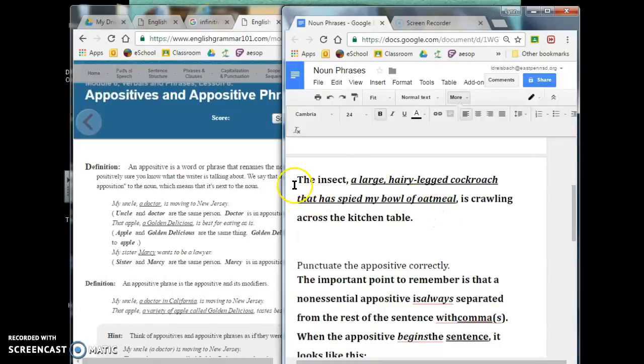Now, we haven't gotten into these yet, but I'm pointing it out because we're gonna get there. Just like prepositional phrases can be adjectives, so can clauses. We talked about noun clauses, but when we get to adjective clauses, this one, that has spied my bowl of oatmeal is describing cockroach. So, this could have been its own sentence, but now it's describing cockroach, so this is going to be something we'll talk about in the future called an adjective clause.